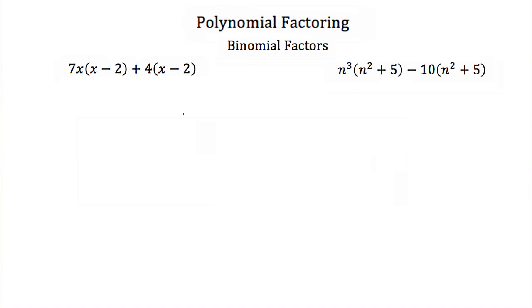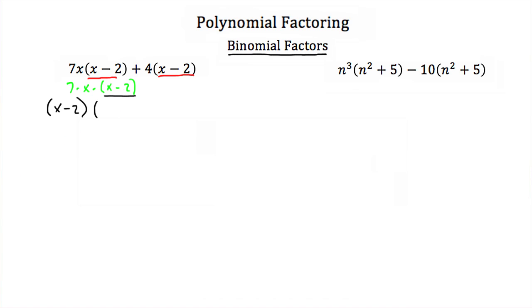Sometimes the greatest common factor is not a number or monomial — sometimes we can have binomial factors that are common in all terms. For example, in 7x times x minus 2, plus 4 times x minus 2, each term has x minus 2 in common. So we factor out x minus 2: from the first term we're left with 7x, and from the second term just plus 4. The factored form is x minus 2 times 7x plus 4.